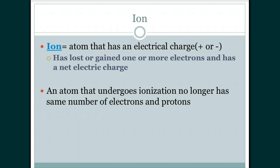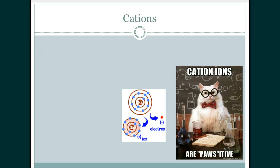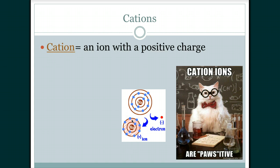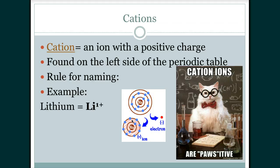Whether an element will lose or gain electrons is actually a characteristic of that element — elements can't decide. Metals easily give up electrons and non-metals gain electrons. If your atom lost electrons and became a positively charged ion, it is called a cation. Cations are positively charged ions. For example, sodium has one electron on its outer shell; once it gives it up, it becomes a positively charged ion.